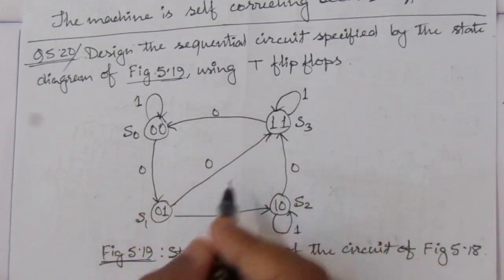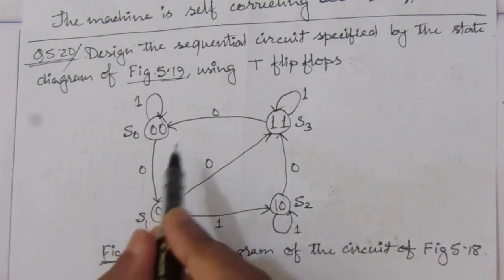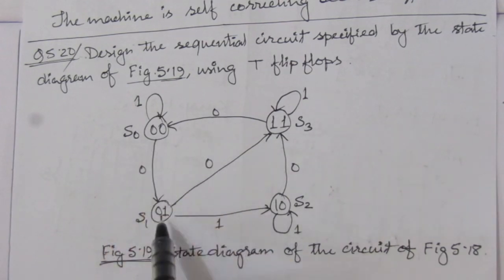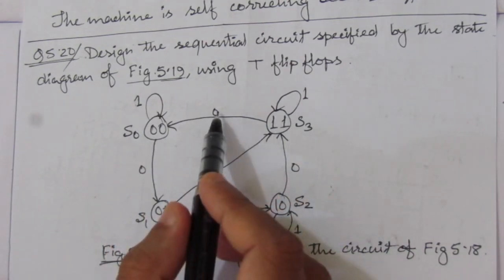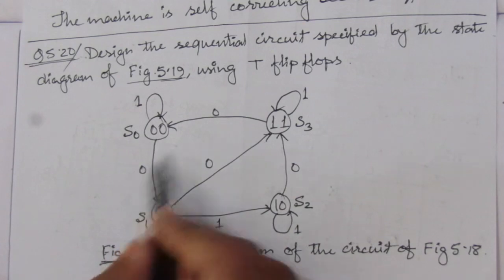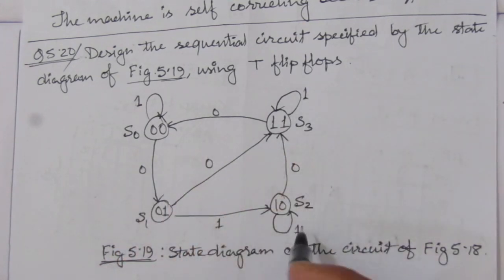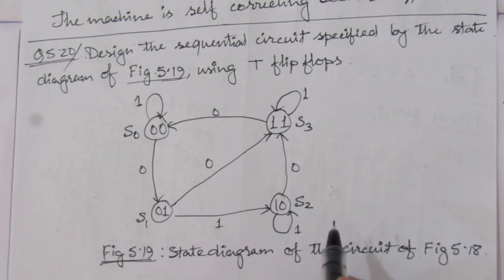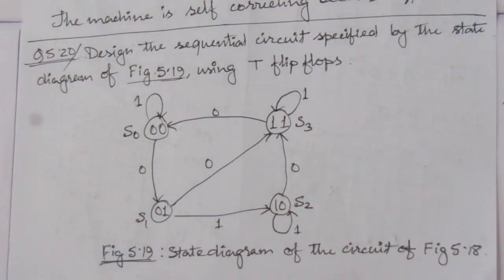The problem is to design the sequential circuit specified by the state diagram of figure 5.9 using T flip-flops. We have to design the sequential circuit of figure 5.19 from the 4th edition book using T flip-flops. Here we have 4 states: 00, 01, 10, and 11, with input values given. First we have to find out the state table, then the state equations, and after that we can design the circuit.